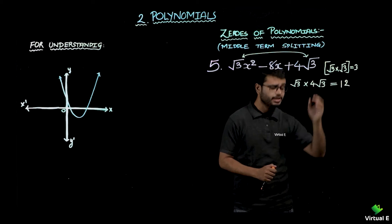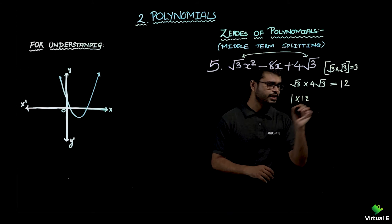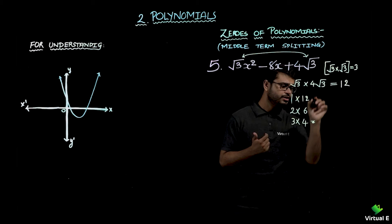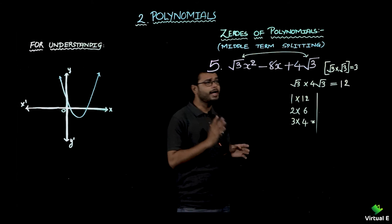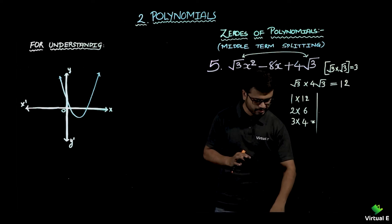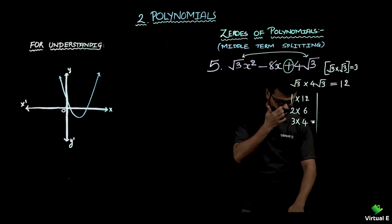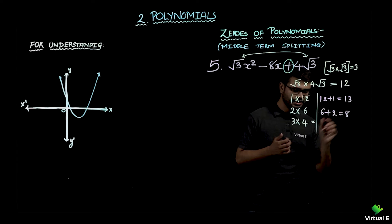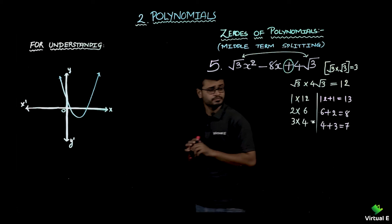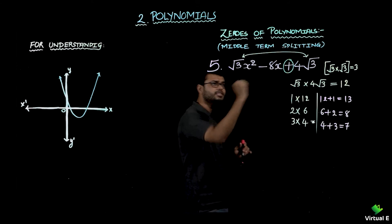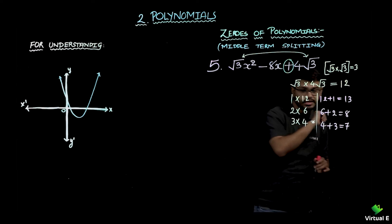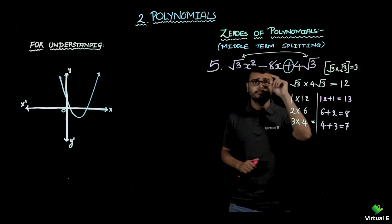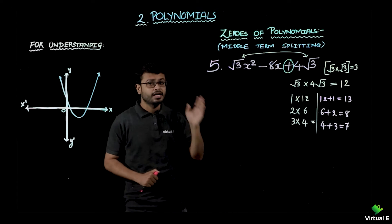Now let's factorize 12. Factors of 12: 1×12, 2×6, 3×4. Now, are we going to add or subtract? We are going to add because the sign of the constant is positive. So: 12+1=13, 6+2=8, and 4+3=7. The middle term is 8, so I select the factor pair 6 and 2.